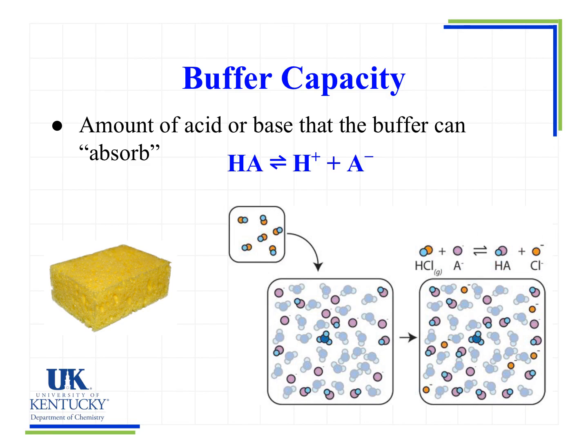We only have a finite number of those A minus particles present in our buffer solution. When some of those are formed into HA, we have fewer A minus molecules available to absorb additional H plus. The same thing is true for adding a base — we can only add so much before we reach the capacity of that buffer.